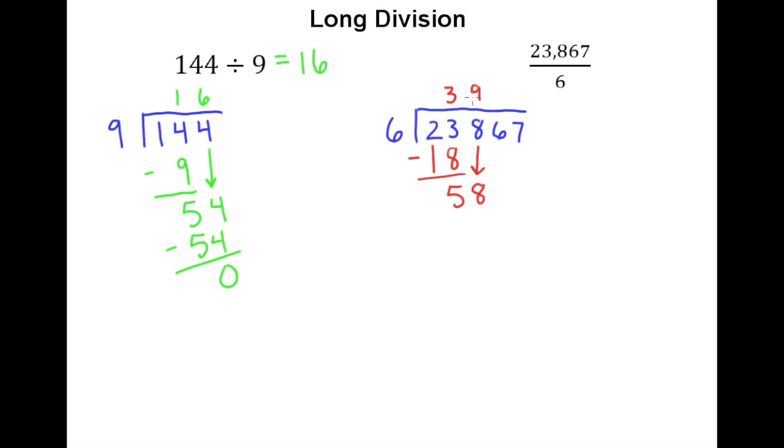And incidentally, if you ever get a double-digit number as your answer for how many times your divisor goes into this, you've done something wrong because it should only be a single-digit number. So 9 times 6 is 54. Get a remainder of 4.